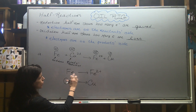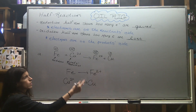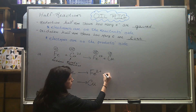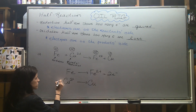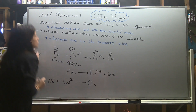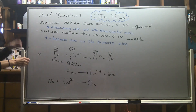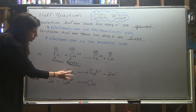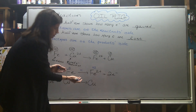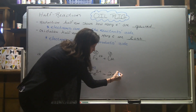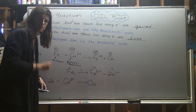Iron has a zero and a plus two; it underwent oxidation, so it lost electrons — electrons go on the product side. You need to indicate how many: it lost two electrons. What you're trying to do by adding electrons is balance the charge. Iron has a charge of zero on the left and plus two on the right — those aren't equal. By adding two electrons (each negative one, so two times negative one = negative two), both sides now equal zero.